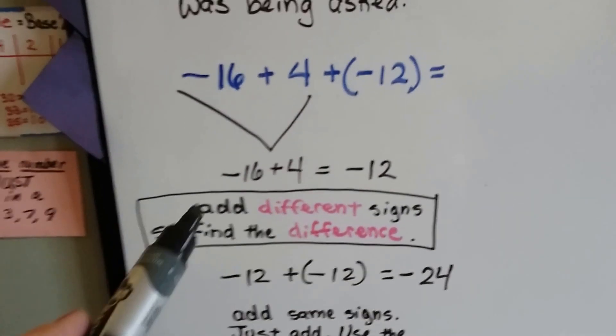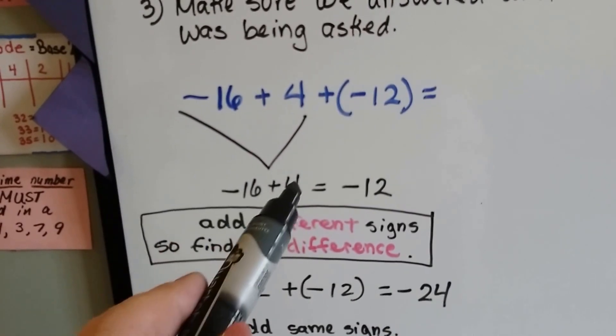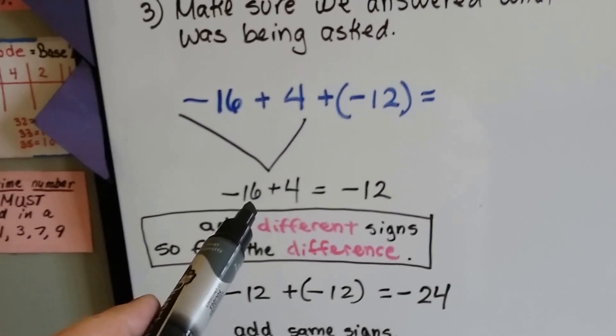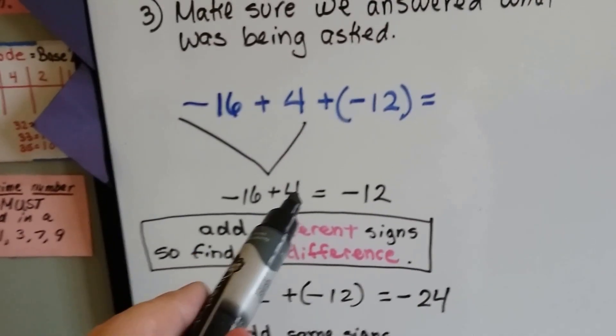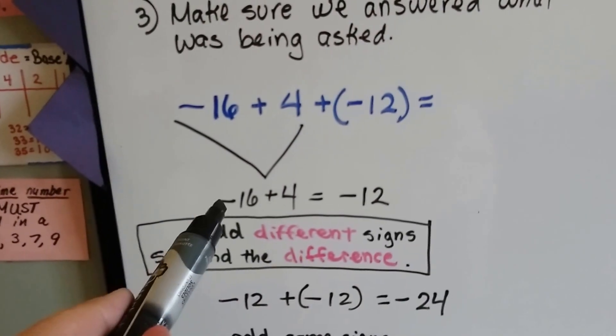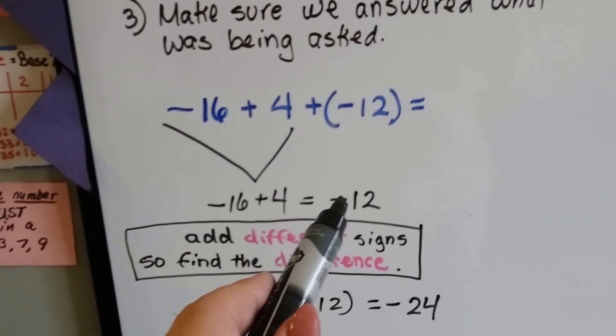And the difference between a 16 and a 4 is 12. Then, we take the sign of the larger absolute value. And which one's bigger and farther away from 0, the 16 or the 4? Well, the 16 is, so that's what we're going to use, the negative from the 16.